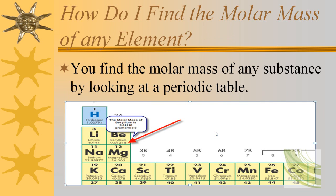How do I know that? I find the molar mass of any substance by looking at the periodic table. For example, beryllium. Beryllium has a molar mass of 9.01218 grams per mole. That means that if I had exactly one mole of beryllium, it would weigh 9.01218 grams.